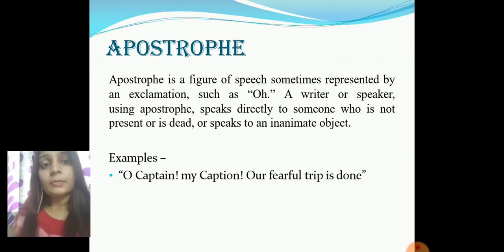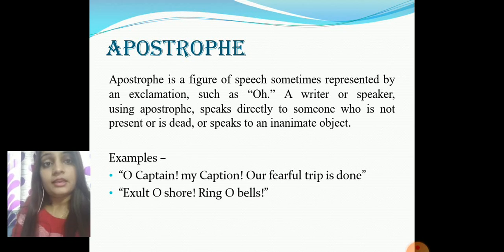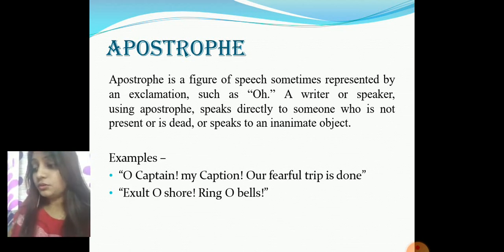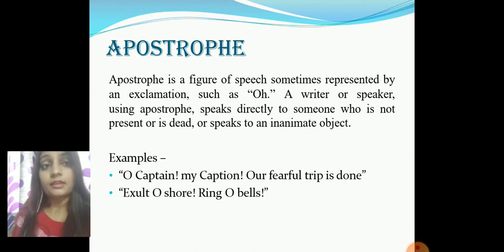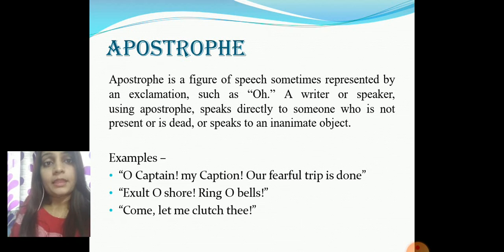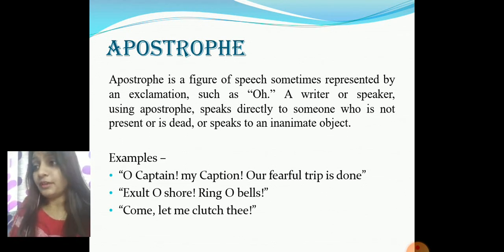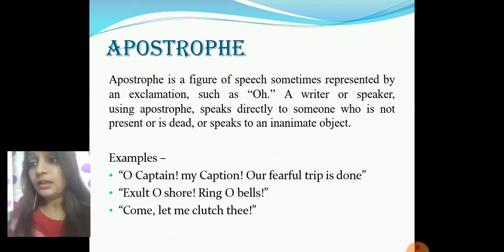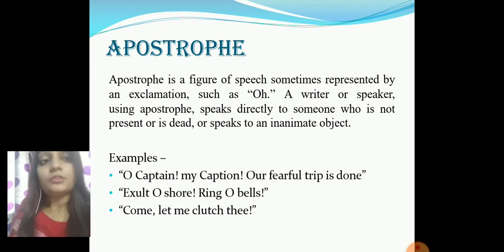In that same poem there is another line: 'Exult, O shores, ring, O bells!' Here, the shores are asked to rejoice and the bells are asked to ring — both are non-living things, yet treated as living. Another example from Macbeth: 'Come, let me clutch thee,' where Macbeth has a vision of a dagger and speaks to it as if it were a person.